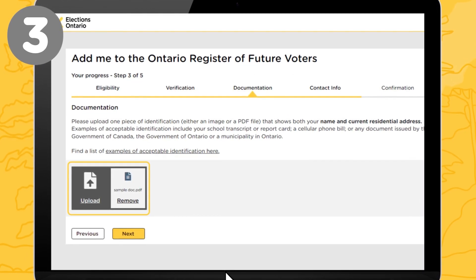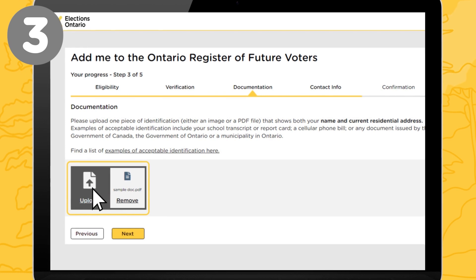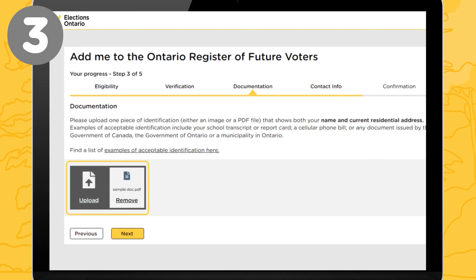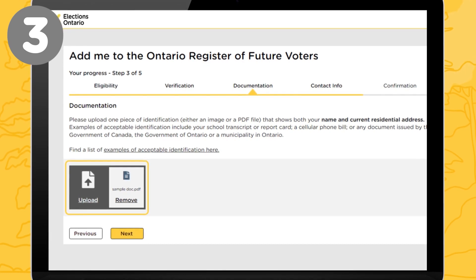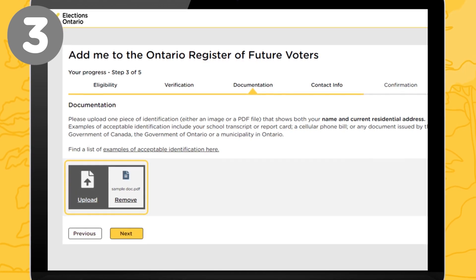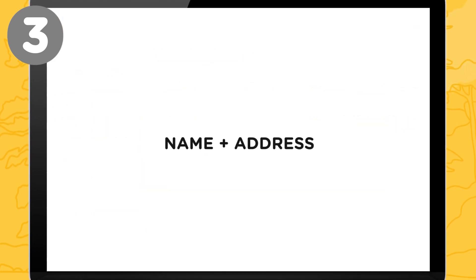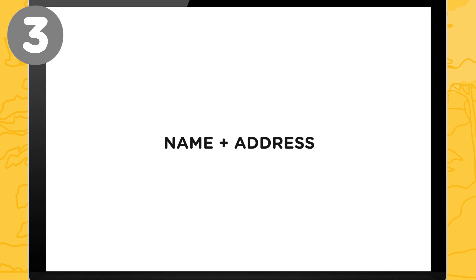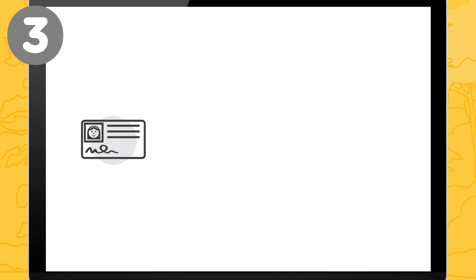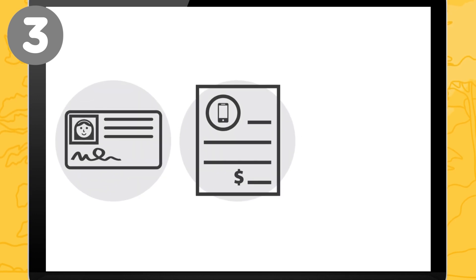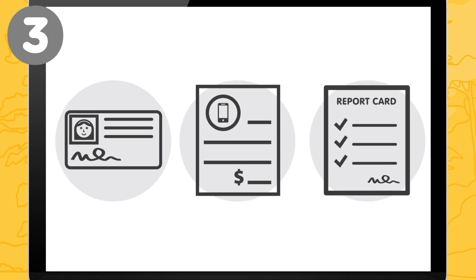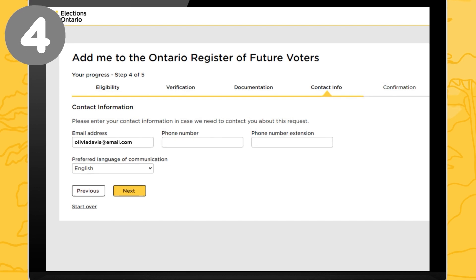You will need one piece of ID, either an image or a PDF file, that shows both your name and current address, such as a driver's license, phone bill, or school report card.